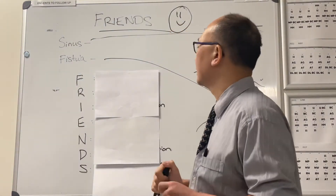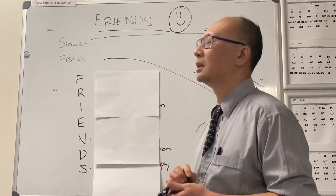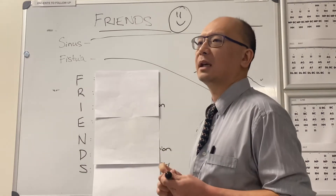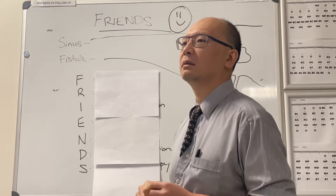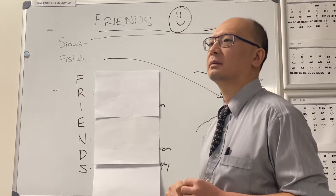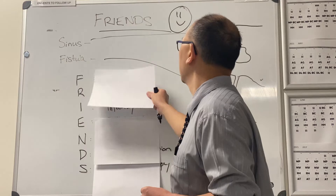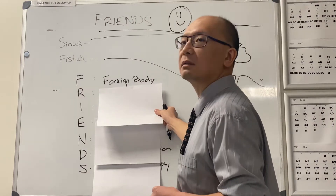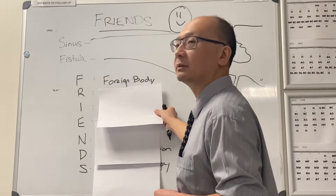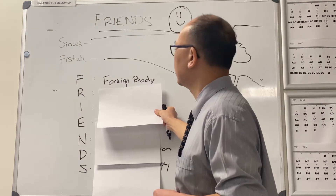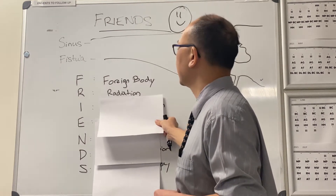We want it to heal up. Friends stop your fistula from healing up. So what's the F in Friends, Callum? F in Friends is a foreign body. Yep, so foreign body stops a fistula from healing. What's the R in Friends? Ben? Ramana? Radiation. Very good.